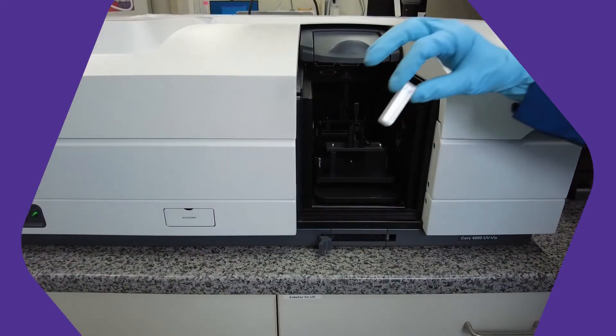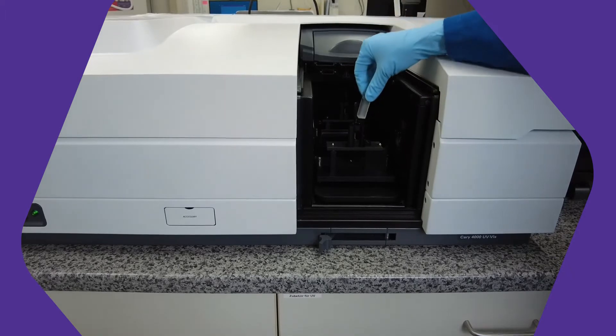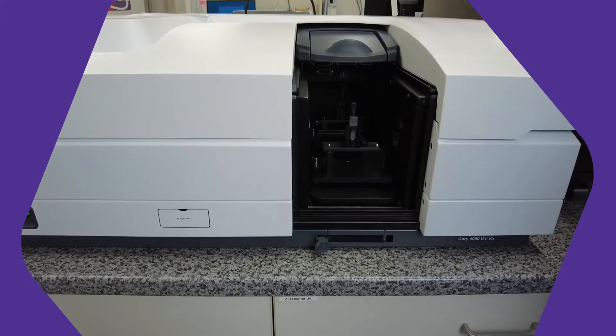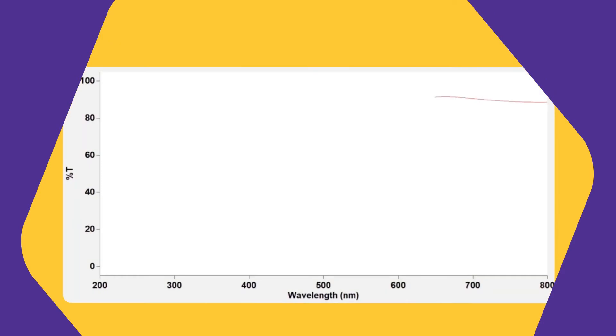We put a clean, empty cuvette into the analyzer and measure our baseline. The light shines from left to right where the value of the light which came through is measured. We can see that all parts of the measured spectrum came through.